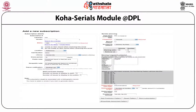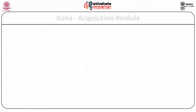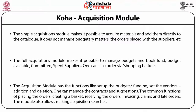The screen shows the Serials module of Delhi Public Library with addition of new subscriptions. The Acquisition module has functions like setup of budgets, funding, setting vendors, additions and deletions. One can manage contracts and suggestions. Common functions include placing orders, creating a basket, receiving orders, invoicing, claims, and late orders. The module also makes acquisition searches. Both simple and full acquisition are possible in Koha.